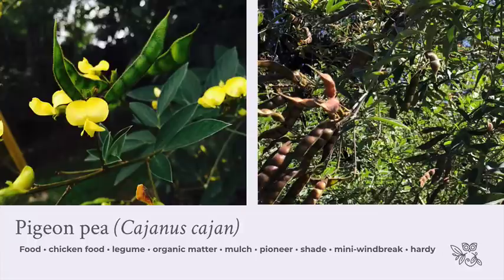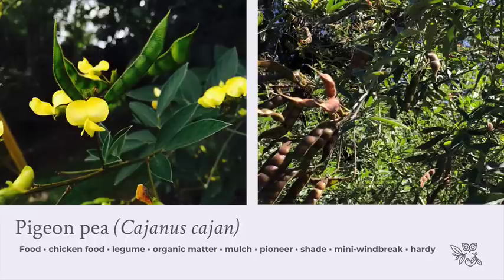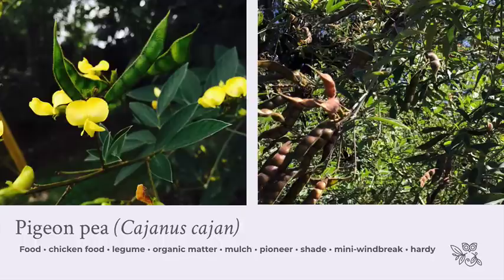Every time you trim the top of a pigeon pea it releases extra nitrogen back into the soil like a slow-release fertilizer. When this short-lived pioneer plant dies after four or five years, its roots break down and release even more. So you're adding mulch, shade, protection, biomass, organic matter, and direct soil nutrition — as well as a great source of food. For thousands of years this plant has been a source of dal in India. Chickens also love pigeon peas, which boosts their egg production and keeps them healthy.